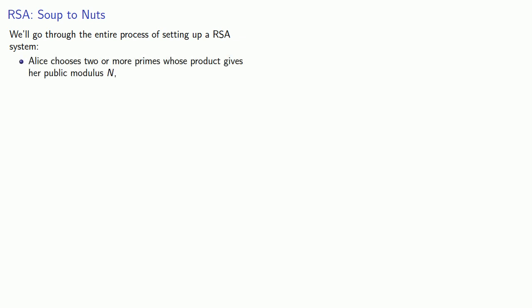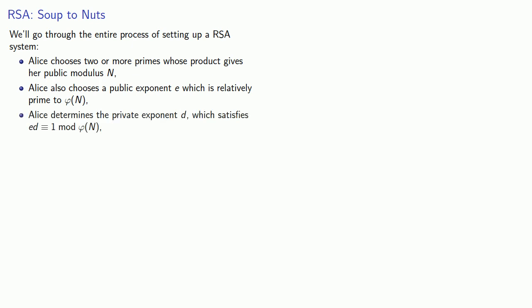First, Alice chooses two or more primes whose product gives her public modulus n. Alice also chooses a public exponent e which is relatively prime to phi of n. Alice then determines the private exponent d which satisfies ed is equivalent to one mod phi of n.